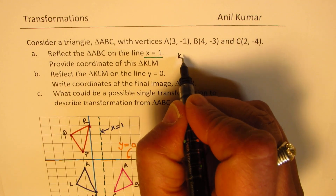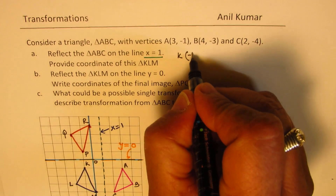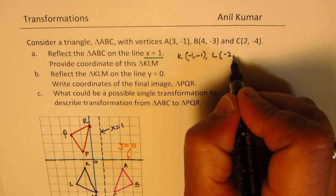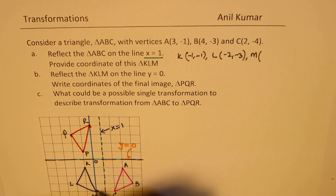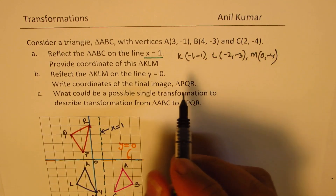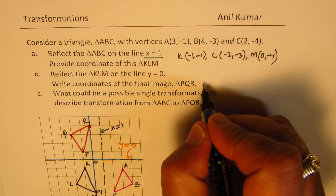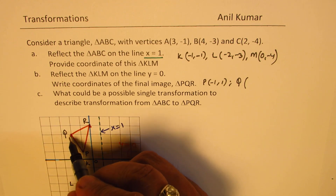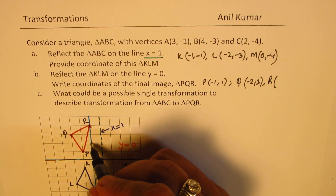For triangle KLM: K is (-1,-1), L is (-2,-3), and M is (0,-4). The coordinates for the final triangle PQR are: P is (-1,1), Q is (-2,3), and R is (0,4).